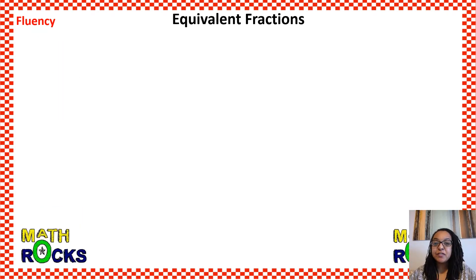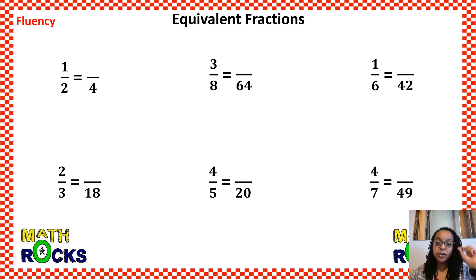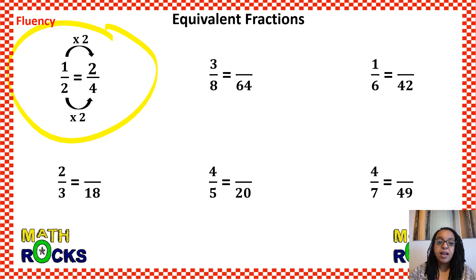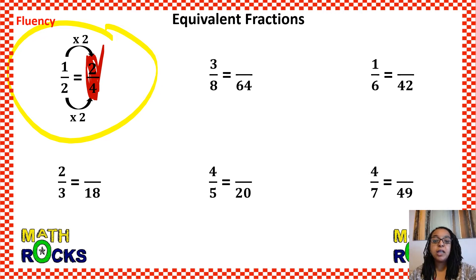Our next fluency section is equivalent fractions — an important skill we need to practice before beginning our addition of fractions. You're changing one fraction to another by multiplying by the same factor in both numerator and denominator. I'll do the first one with you: one half equals how many fourths? The denominator goes from 2 to 4 by multiplying by a factor of 2, so I multiply the numerator 1 by 2 as well, getting 2 fourths. I can check by simplifying 2 fourths, which does become 1 half. Take a little less than a minute to do the remaining problems, and I'll put up the answers so you can check your work.